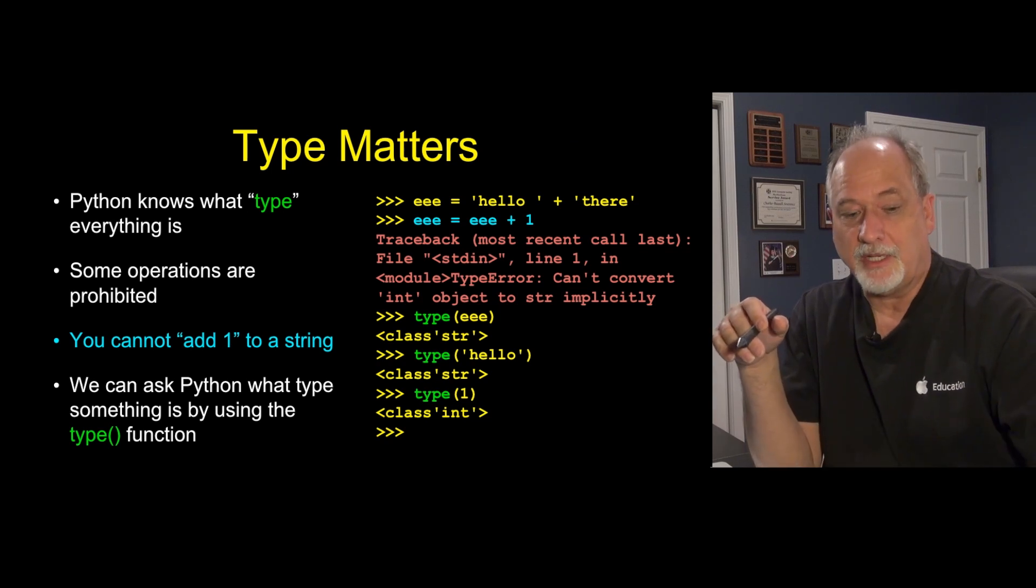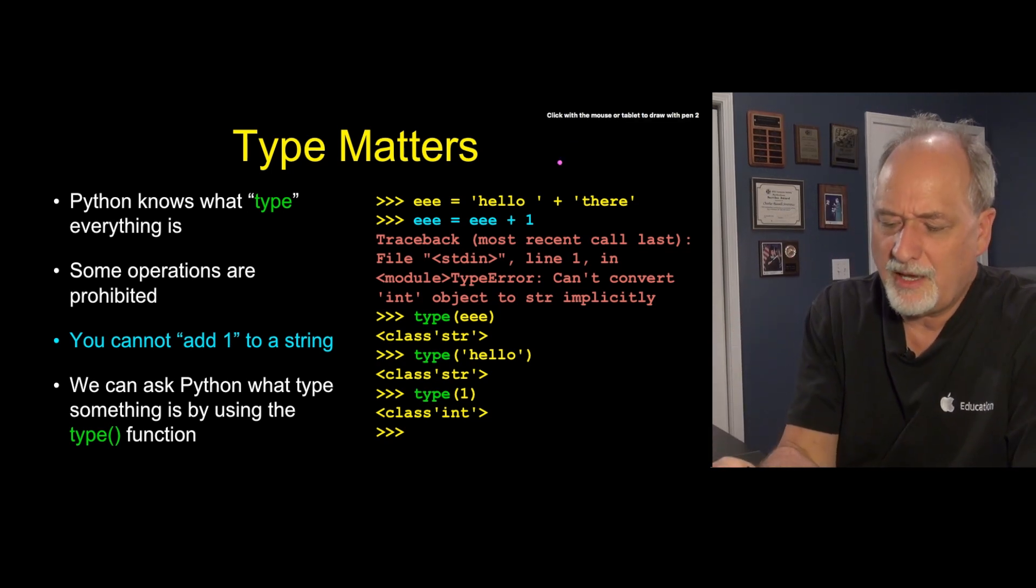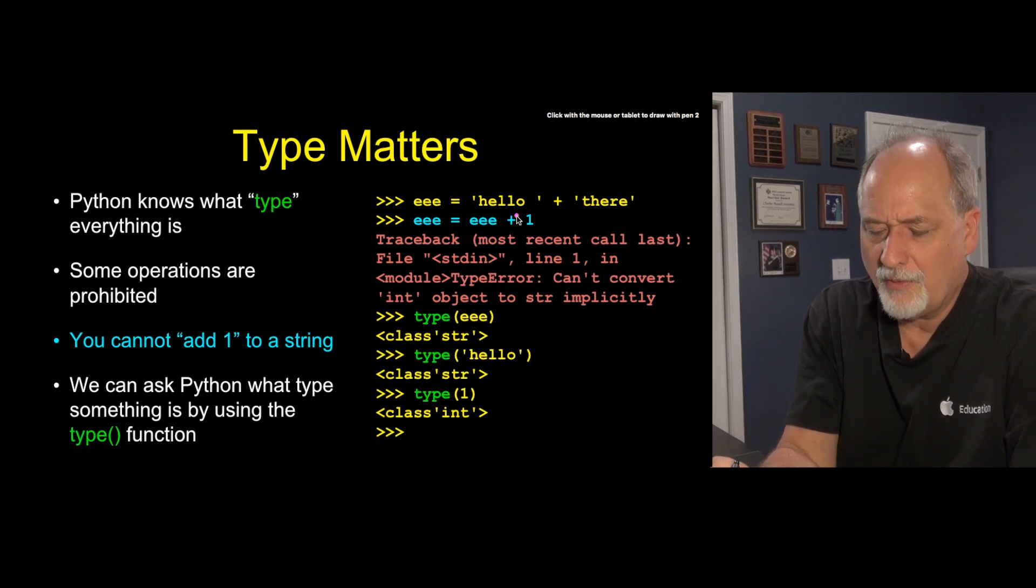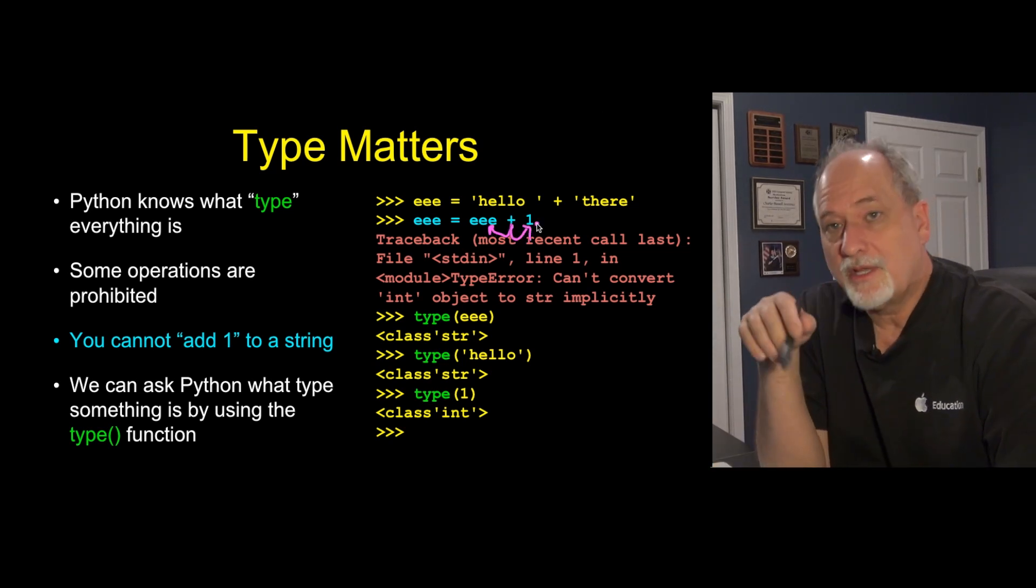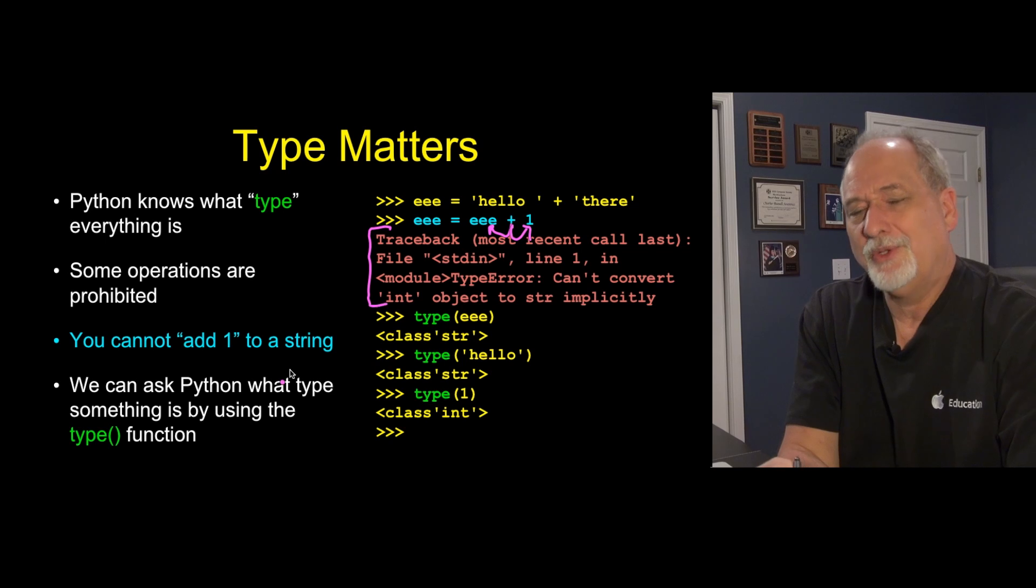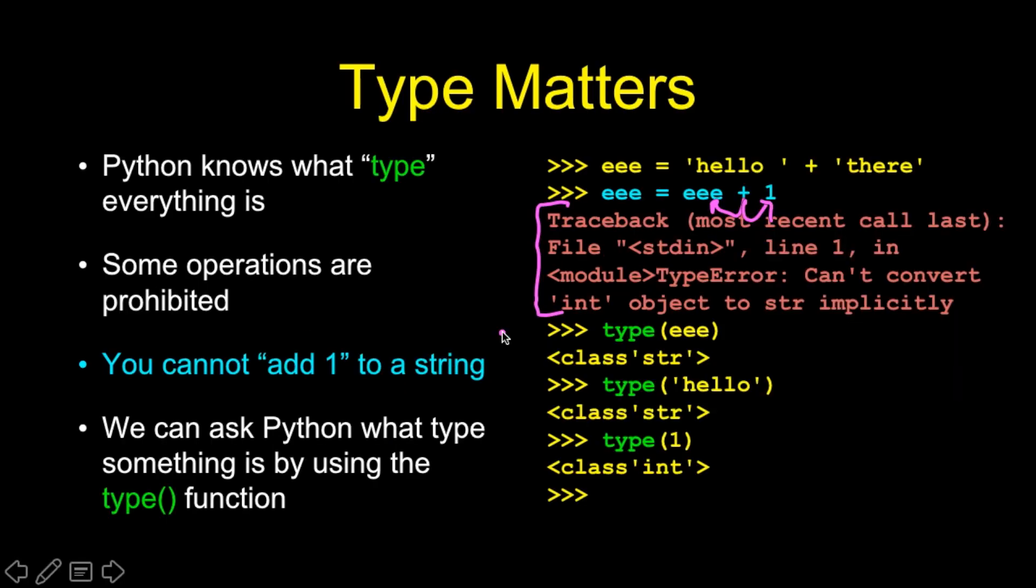Sometimes type can get us in trouble. Here we have EEE, which is hello there, because we've concatenated these two strings together. And now we're adding 1, and the problem is that it looks on one side and says that's a string, and that's a number, and says I don't know how to do that. This is another one of those annoying errors that you think that somehow Python doesn't like you, but it's just confused. Traceback always means I quit. It means I stopped. I'm quitting now because I don't want to go any farther because I've become confused. So your program stops running.